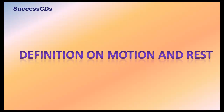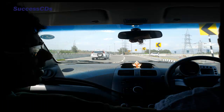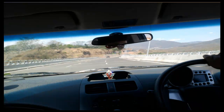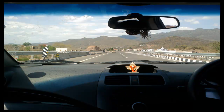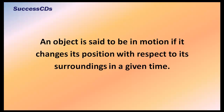Before we talk about the definition of motion and rest, let's try to imagine yourself sitting in a seat while traveling in a moving car. We observe no change in position with respect to the window, but there is a change of scene when we view through the window. The change of scene indicates that the car is moving and is in motion. An object is said to be in motion if it changes its position with respect to its surroundings in a given time.